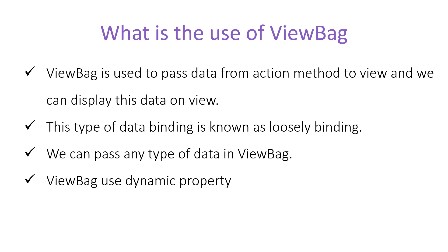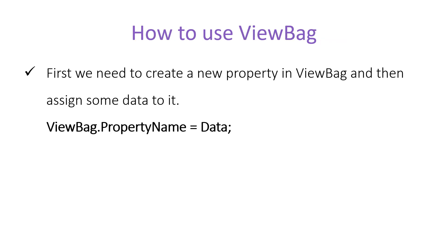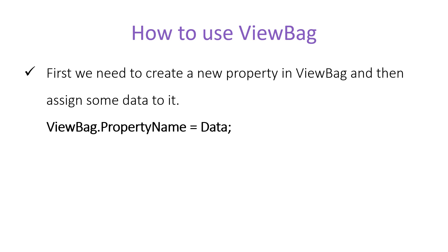Now let's learn how to use ViewBag. First, we need to create a new property in ViewBag and assign some data to it. In general, this happens inside a controller's action method. So inside an action method, first write ViewBag, then press dot, and after dot specify the name of your property. Since ViewBag works dynamically, you can define any property name suitable for your application.